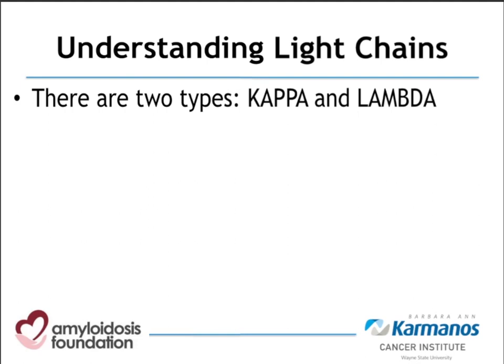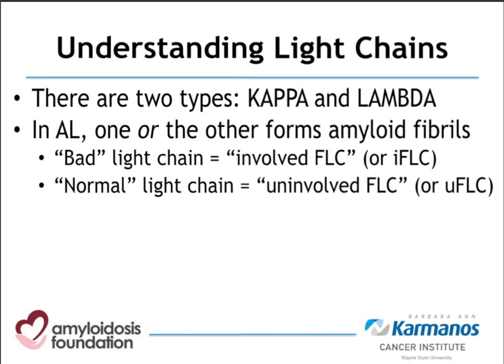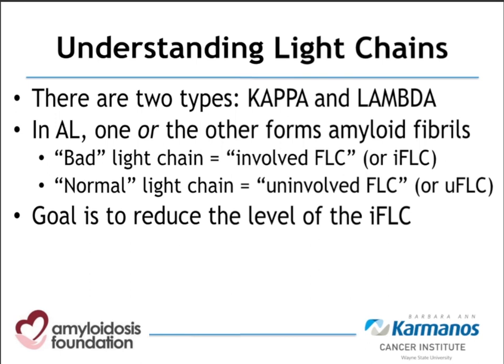In light chain amyloidosis, because there's an overgrowth of a single clone of cells that are either kappa-forming or lambda-forming, we think of one of the light chains as the bad light chain — we call that the involved free light chain. The other is made by normal plasma cells and is called the uninvolved free light chain. On a blood lab report, we get a value for both the involved and uninvolved free light chain. Our goal of therapy is to reduce the excess amount of the involved light chain, which will typically be quite a bit higher.